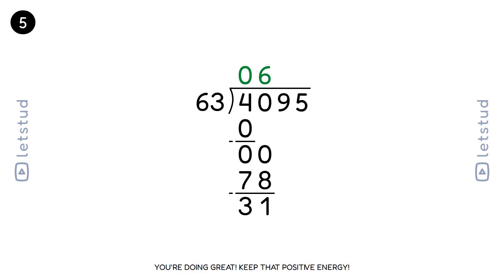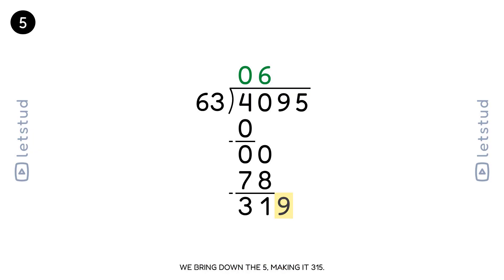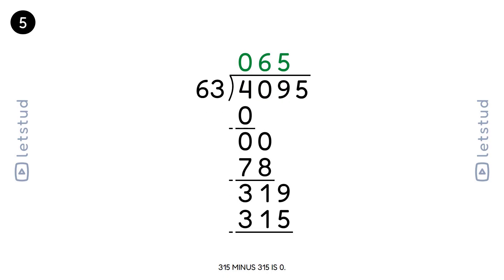You're doing great, keep that positive energy. Let's bring down the last digit, 5, making it 315. 63 fits into 315 five times. 63 times 5 is 315. 315 minus 315 is 0.